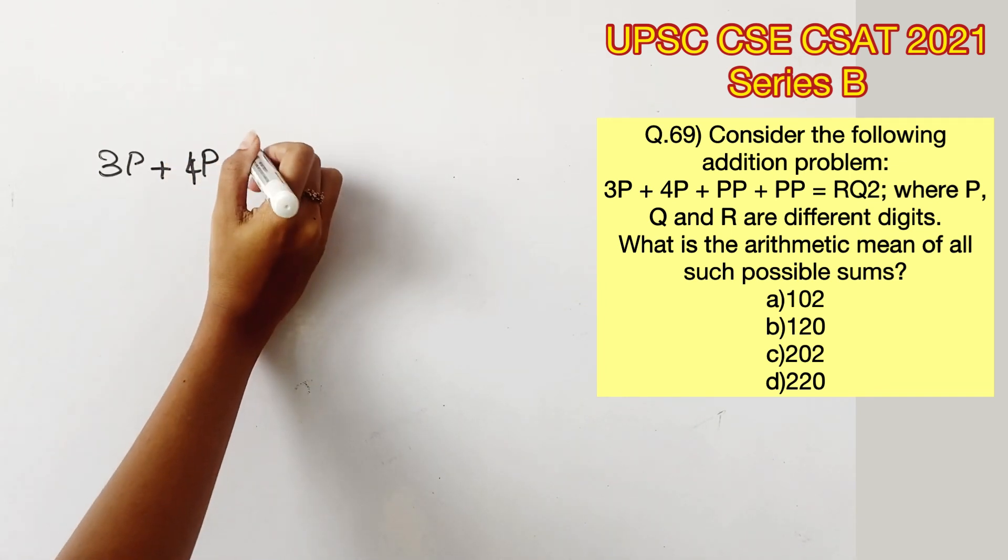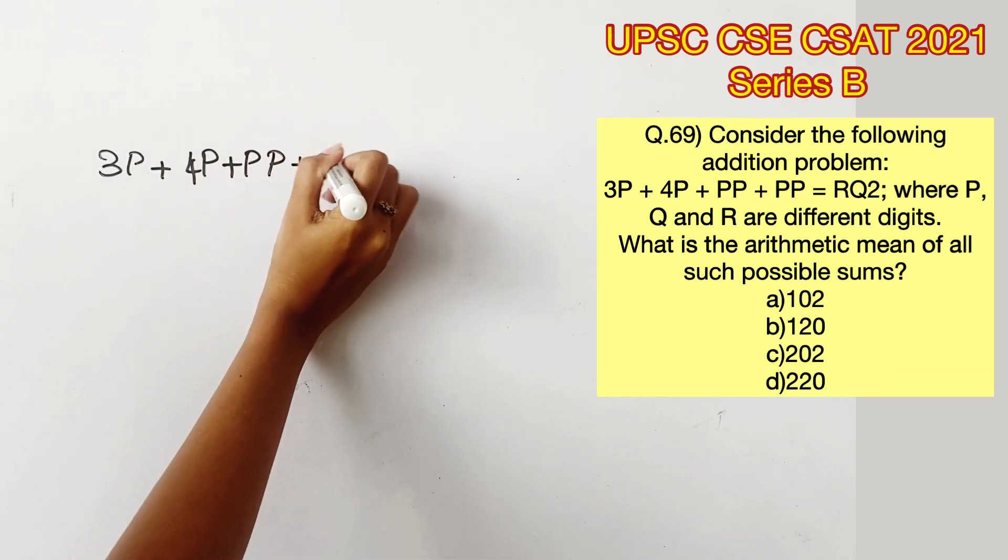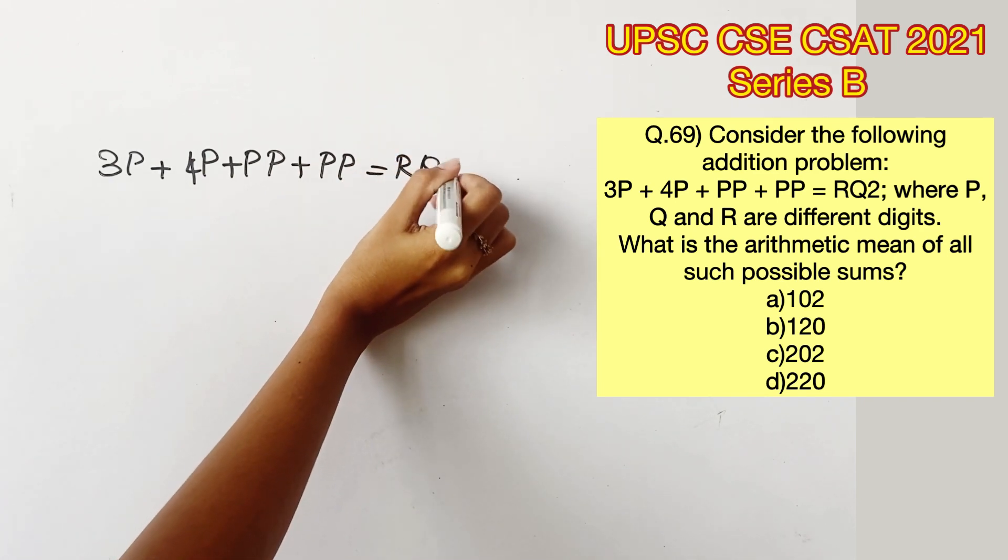Given that 3P plus 4P plus PP plus PP equals RQ2, where P, Q and R are different digits.